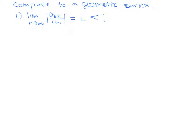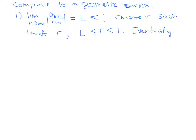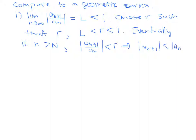What we are going to do is choose some R such that L is less than R, which is less than 1. So eventually, if little n is bigger than some boundary capital N, you know that the ratio of a_sub_(n+1) over a_sub_n will be less than R, or equivalently, |a_sub_(n+1)| will be less than |a_sub_n| times R.